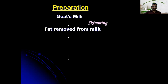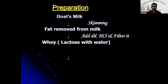Once the fat is removed by skimming, we add dilute hydrochloric acid to remove the protein and then filter it. When dilute hydrochloric acid is added, the protein in the milk will be denatured and settle over the top of the solution. We can manually remove it and the resultant product is called whey, which contains only lactose, water, and some trace minerals.